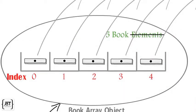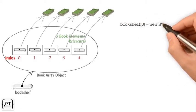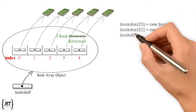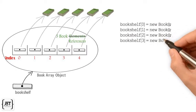So, we have an array of book reference variables. To achieve all this, we will need to create book objects and assign them to array elements.